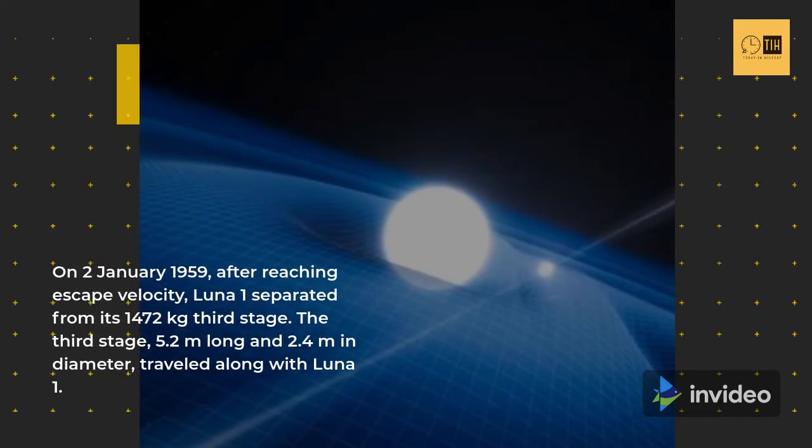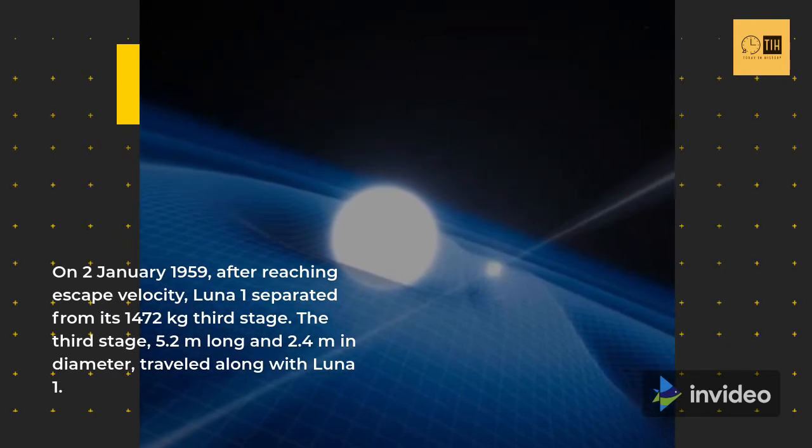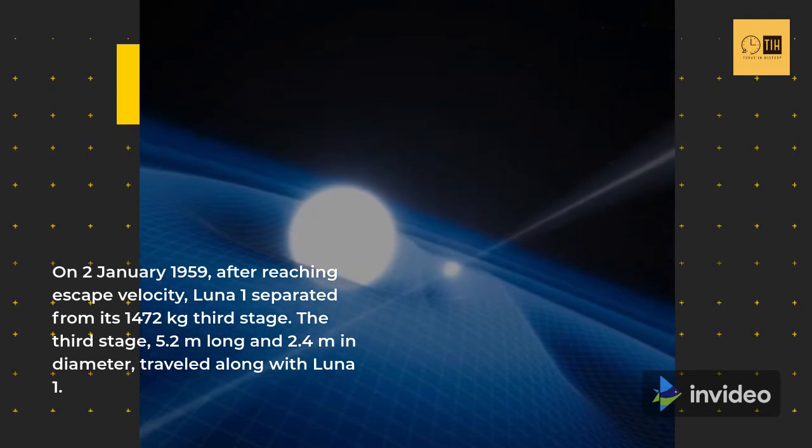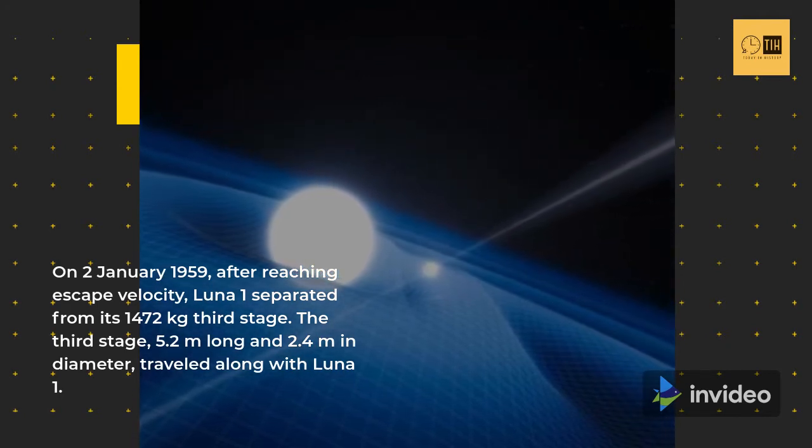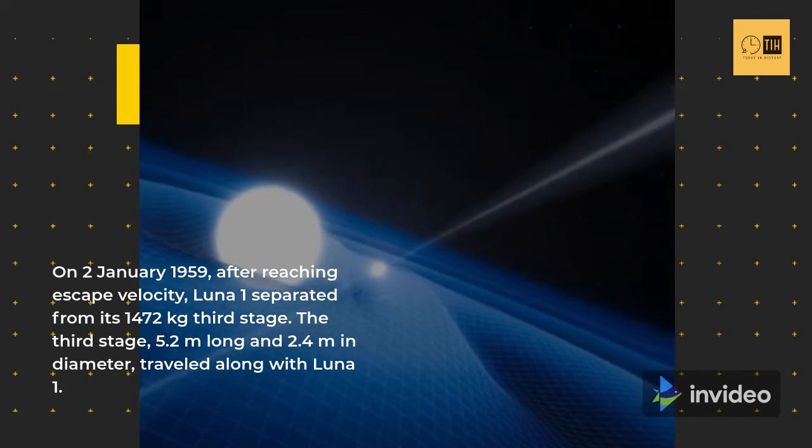On January 2, 1959, after reaching escape velocity, Luna 1 separated from its 1,472 kg third stage. The third stage, 5.2 m long and 2.4 m in diameter, traveled along with Luna 1.